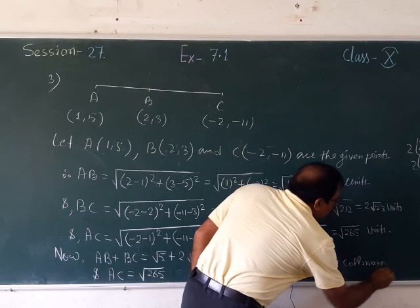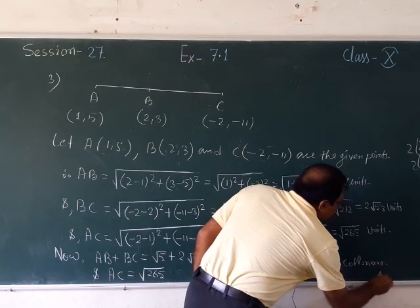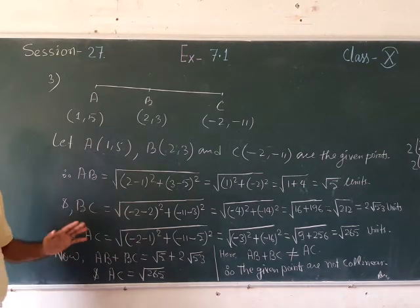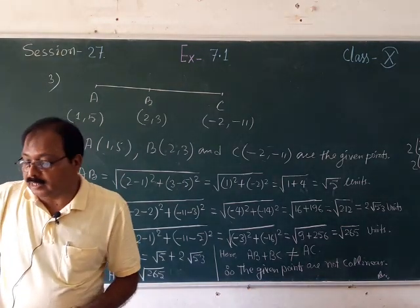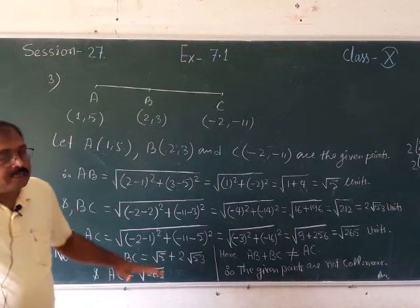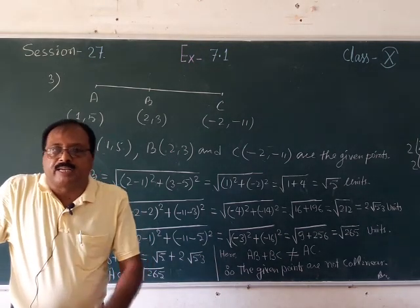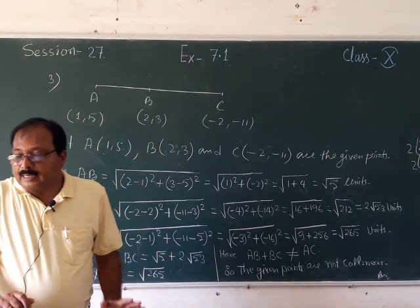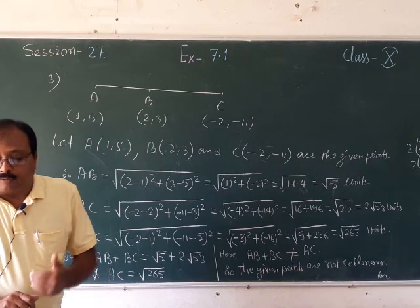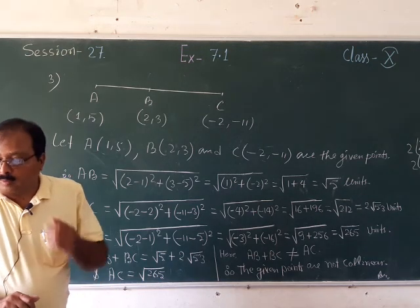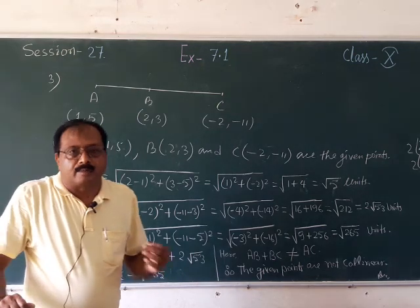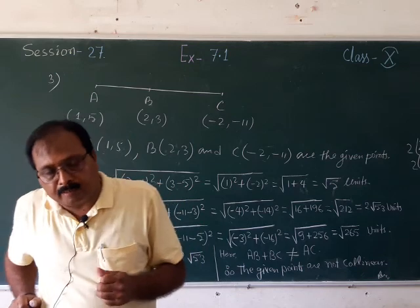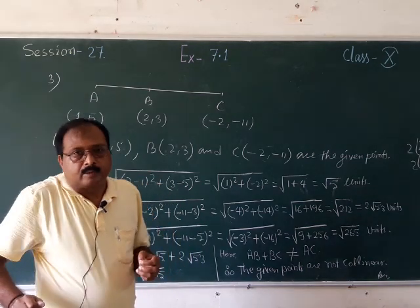Like that you have to write your answer — your observation that the given points are collinear or not. Here you have seen that using the distance formula is very easy and simple, and you can use it nicely for the coming questions. We will see some more questions in my coming class. Until then, try the remaining questions by yourself. Thank you.